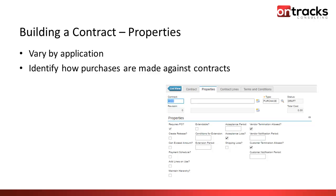There's flexibility around whether to allow exceeding the maximum amount, whether there's a payment schedule, and adding lines on use — for example, in a services agreement for mechanical or electrical services, you might allow them to add lines for shop supplies or overhead fees on individual release POs. There are also settings for extended period, extensions, and acceptance and notification periods, which allow us to send off email notifications about contract expiry and who to contact.